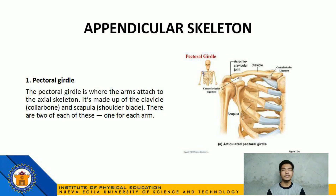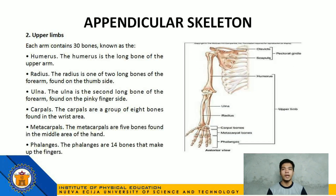Next, let's identify what the appendicular skeleton is composed of. Number 1: Pectoral girdle — where the arms attach to the axial skeleton. It is made up of the clavicle or collarbone and scapula or shoulder blade. There are 2 of each of these, one for each arm.